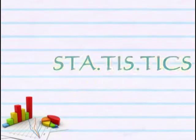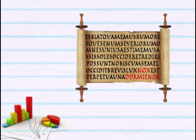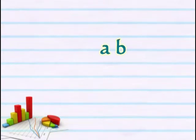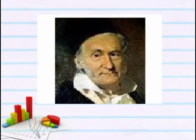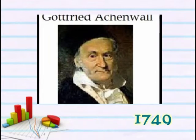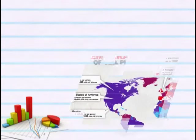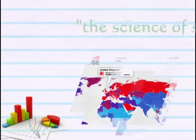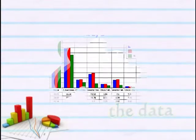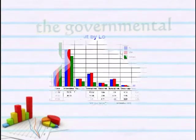The word statistics is derived from the New Latin 'statisticum collegium,' meaning council of state, and the Italian word 'statista,' meaning statesman or politician. Statistics was introduced for the first time by Gottfried Achenwall in 1749. At that time, statistics was used to designate the analysis of data about the state — it could be named the science of state. Therefore, the original purpose of statistics was data used by governmental and administrative parties.